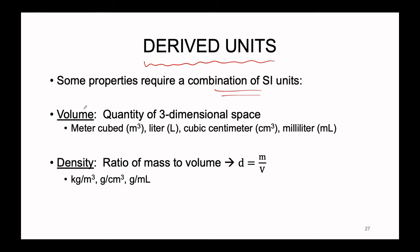Volume is a derived unit — a quantity of three-dimensional space. All you need to figure out volume is length in three different directions: x, y, and z. Standard volume units include meters cubed, the liter, the cubic centimeter, and the milliliter. There are plenty more, like the gallon, pint, and cup. Each is a derived unit, and in meters cubed we can see explicitly how it is derived from the SI unit of length.